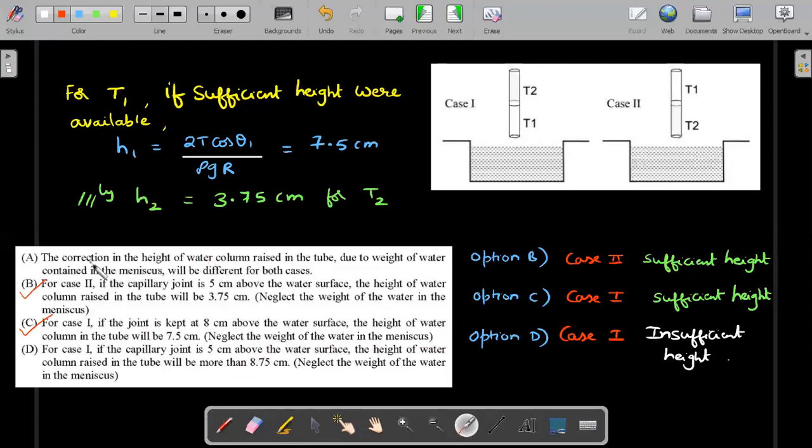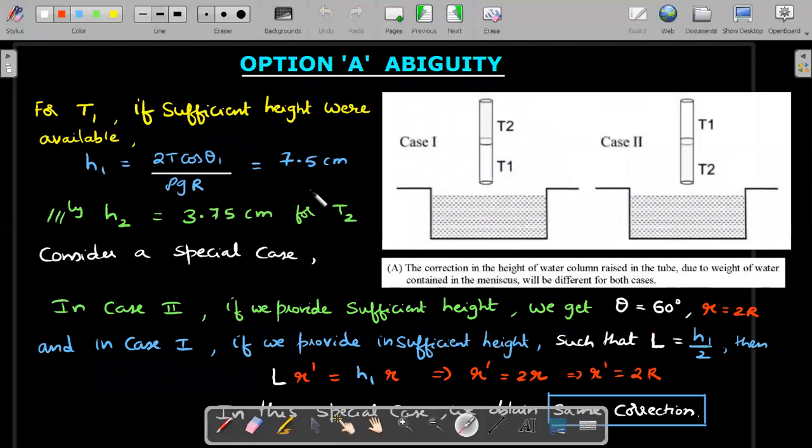Now coming to the option A, the ambiguity that we are going to discuss. Correction in height of water column raised in the tube due to weight of water contained in the meniscus will be different for both cases. So case one and case two, he's saying that the correction should be different, which in turn means the angle of contact should be different. On the face value of it, IIT gave this key. And I think what they were suggesting is they are talking about the zero degree and 60 degree situation. And therefore the answer was coming out to be A. But since option D also is mentioned, there could be a case in which in one of the cases it is insufficient and the angle of contact could be changed. So let's investigate that special case and talk about the ambiguity.